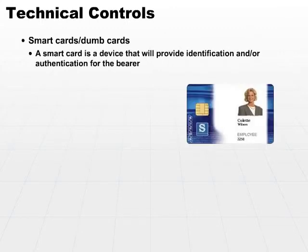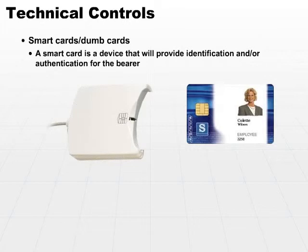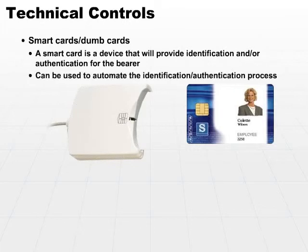A smart card is a device that will provide identification and or authentication for the bearer. It's a badge that either has a magnetic stripe on the back or has a chip inside that can be read by some card reader device. These smart cards can be used to automate the identification and authentication process.